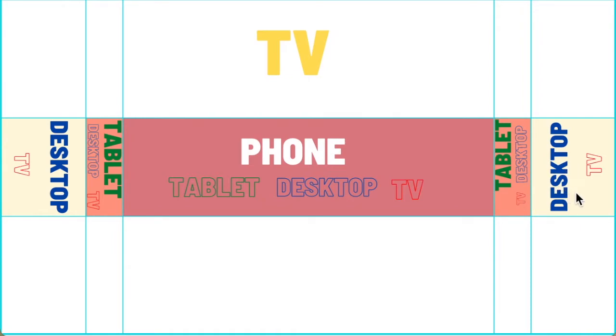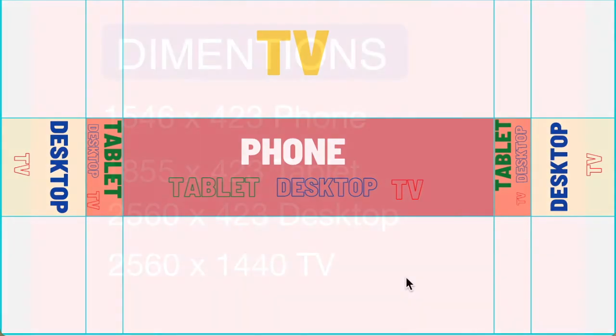The next area is recognizable on desktop and on TV. And the upper and lower white part of this screen is visible only on TV.